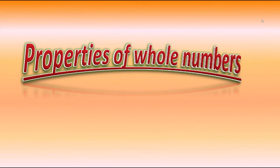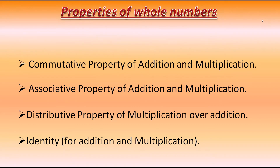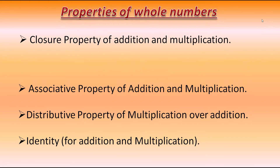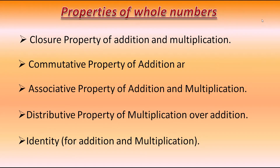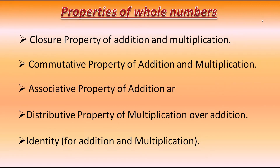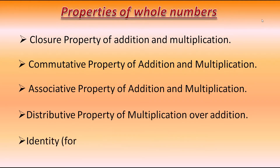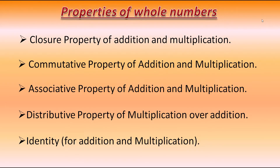These are the properties of whole numbers: closure property of addition and multiplication, commutative property of addition and multiplication, associative property of addition and multiplication, distributive property of multiplication over addition, and identity of addition and multiplication. Let's learn all the properties one by one with the help of examples.